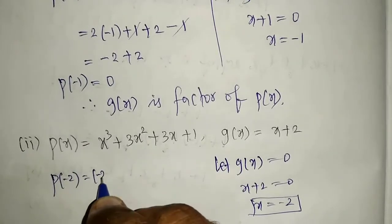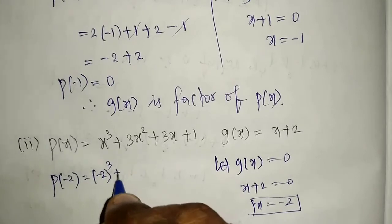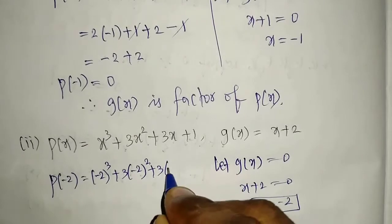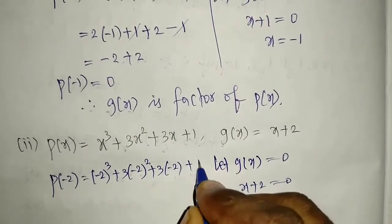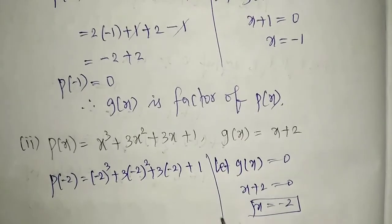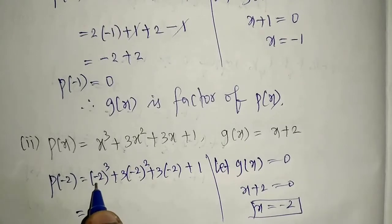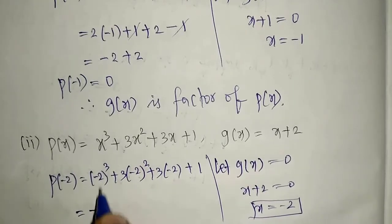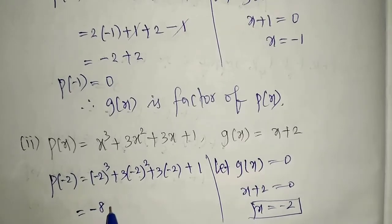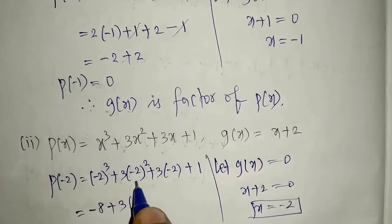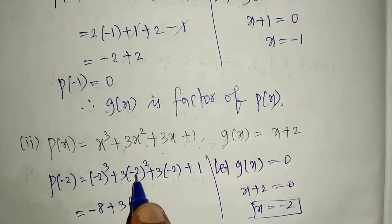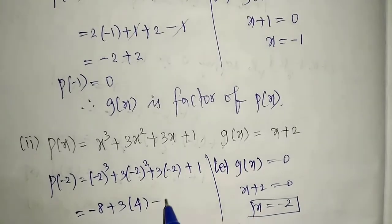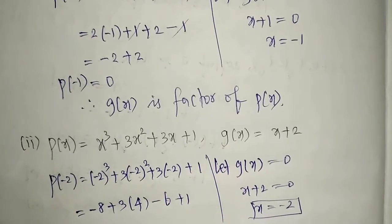p of minus 2 equals minus 2 cubed, plus 3 into minus 2 squared, plus 3 into minus 2, plus 1. Now, minus 2 cubed — since the power is odd — gives minus 8. And 3 into minus 2 squared: the square makes it positive, so 3 times 4 equals 12.